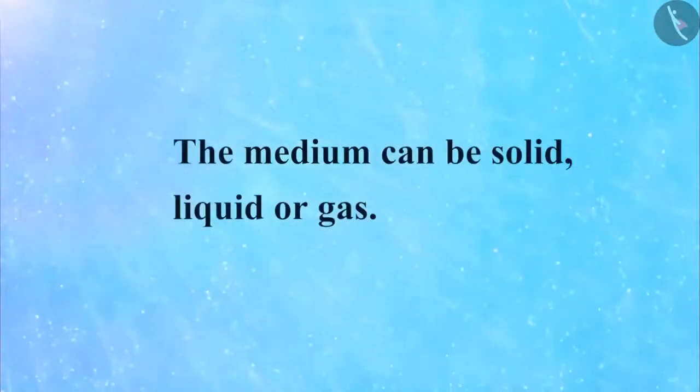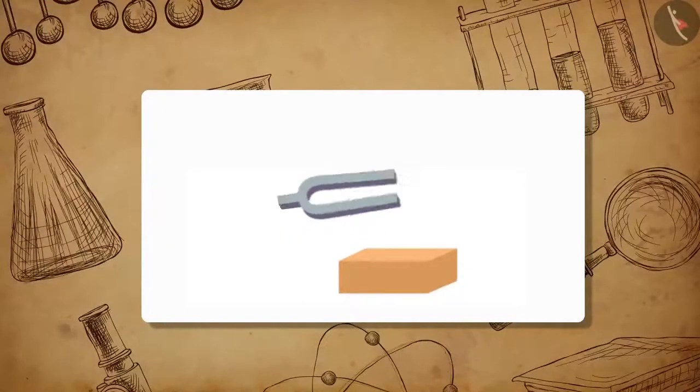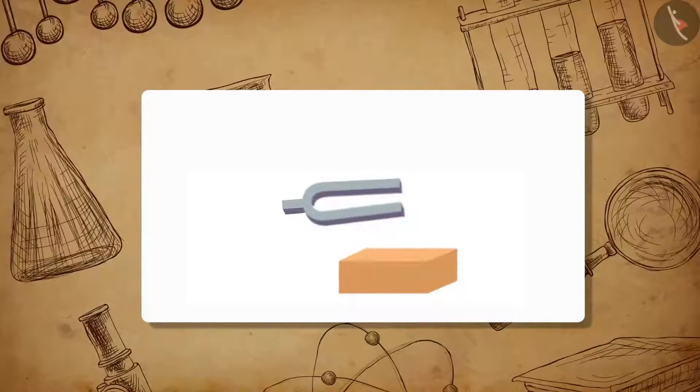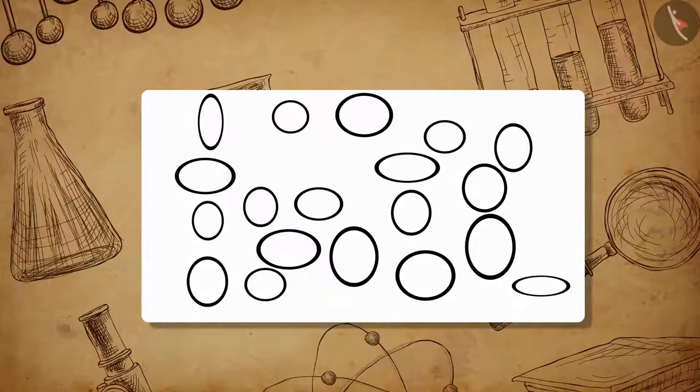The medium can be solid, liquid, or gas. As soon as an object is set on vibration, it starts the vibration of the particles around it. A particle of a medium in contact with the vibrating object gets displaced from its equilibrium position.